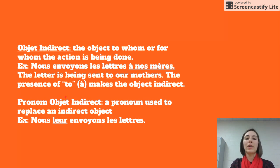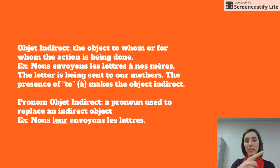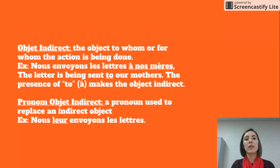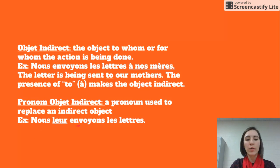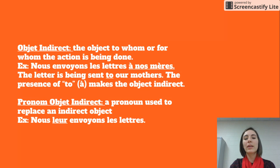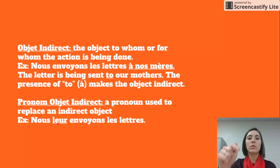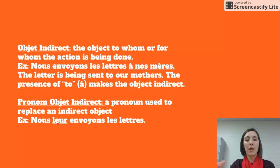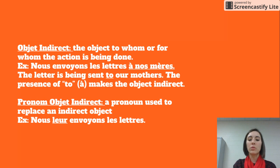Our pronom objet indirect is the pronoun used to replace an indirect object. Four of those are the same as our direct object pronouns and reflexive pronouns, and in the third person we have two different object pronouns. For example, nous envoyons les lettres à nos mères becomes nous leur envoyons les lettres — the word leur replaced à nos mères to mean 'to them.'